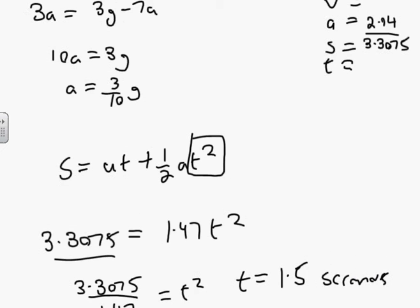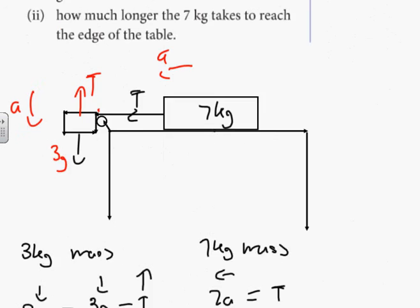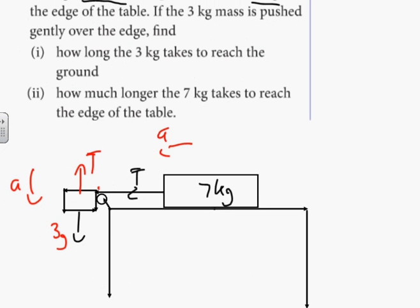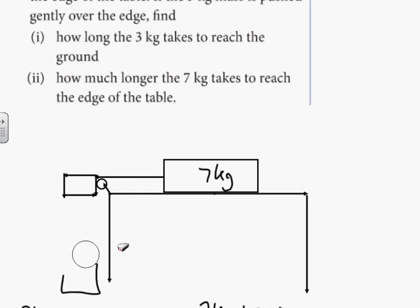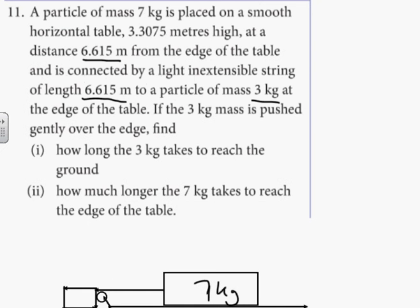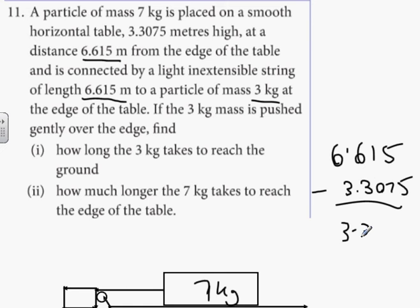Now what happens next is how much longer does it take the 7 kilograms to reach the edge of the table? Because they're both connected, when this travels 3.3 meters downwards, that also means the 7 kilogram mass is 3.3075 closer to the edge of the table than it had been. So our original distance, 6.61, take away 3.3075. I think one is exactly double the other. So 3.3075 to go.